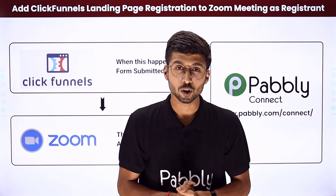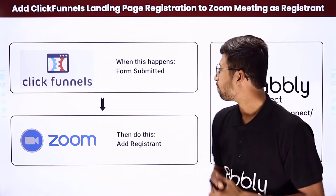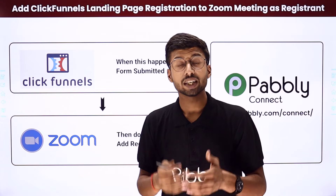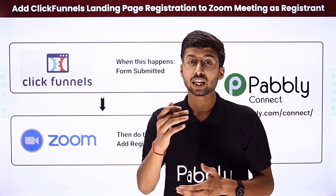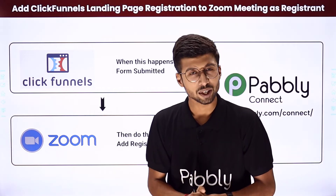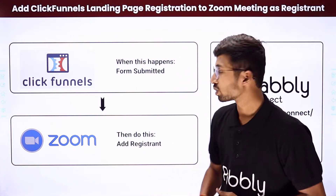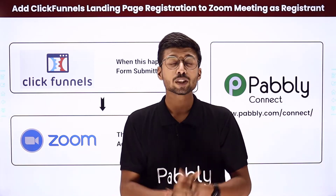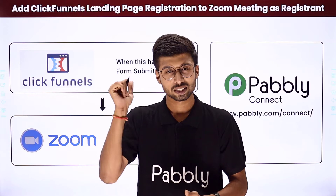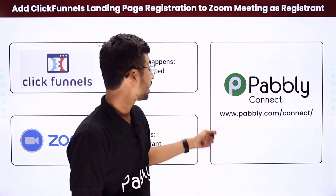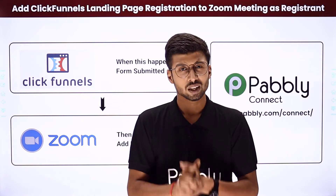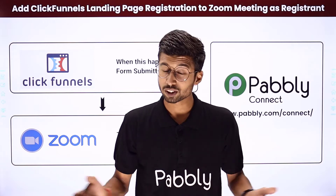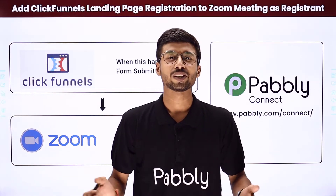So in this video, to solve your problem, I came up with an awesome automation: whenever the form is submitted on our ClickFunnels landing page — whenever someone enters their details and registers for our Zoom meeting — we will automatically add that very same user with the same details as a new registrant in our Zoom meeting. To make this happen, we will be using Pabbly Connect, which is an automation and integration software. To know the step-by-step guide, follow along on my screen.